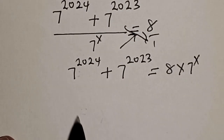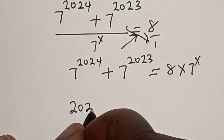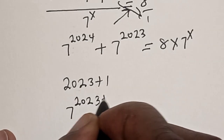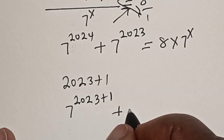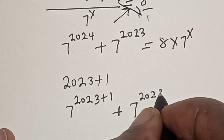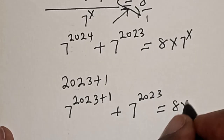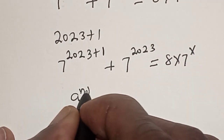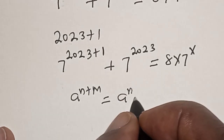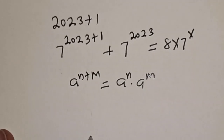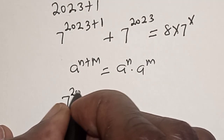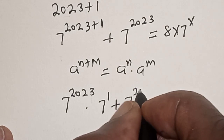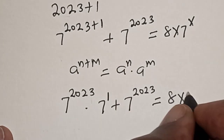Now 2024 is the same thing as 2023 plus 1. So we have 7 raised to power 2023 plus 1, plus 7 raised to power 2023, is equal to 8 multiplied by 7 raised to power x. Remember this rule: a raised to power n plus m equals a raised to power n multiplied by a raised to power m.